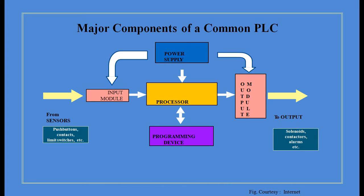This block diagram is very simple: a central processing unit connected to input modules, output modules, power supply, and a programming device. The programming device can be continuously connected with the PLC, or once we send the program to the PLC, we can detach it — it's not necessary to keep the programming device connected. Once the PLC gets the program, we can disconnect the programming device. Downloading the program to the PLC is a very simple task.